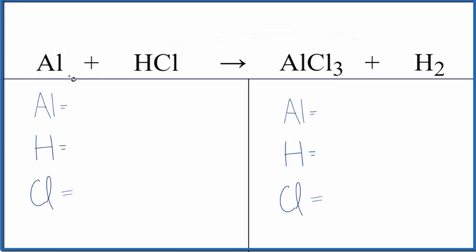Let's balance the equation. We have one aluminum, one hydrogen, and one chlorine atom in the reactants. In the products we have our one aluminum, then we have two hydrogen atoms and three chlorine atoms.